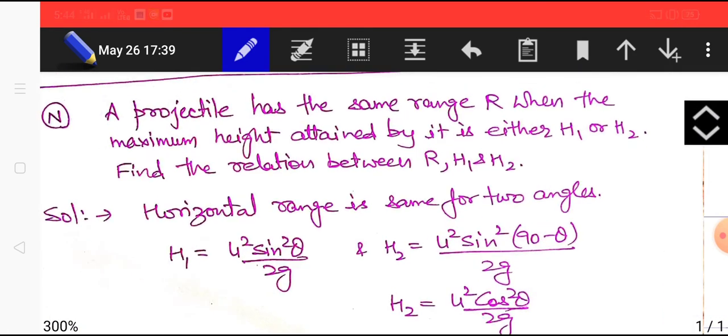Look at another question. A projectile has same range R when the maximum height attained by it is either h1 or h2. Find the relation between R, h1, and h2. We studied about same range at two different angles. The relation between angles is that they must be theta and 90 minus theta.